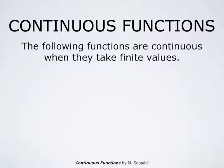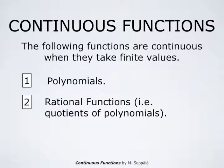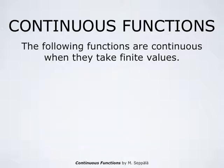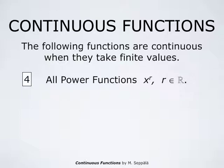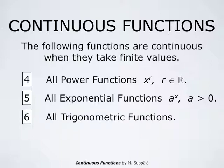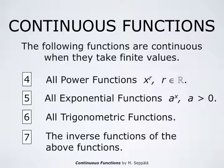From the properties of limits it follows that all polynomials are continuous functions everywhere. Rational functions, that is quotients of polynomials, are continuous where they take finite values, and the inverse functions of the above are also continuous. Likewise, all power functions x to the power r where r is a real number are continuous. All exponential functions a to the power x where a is positive are continuous. All trigonometric functions are continuous, and the inverse functions of the above are all continuous.